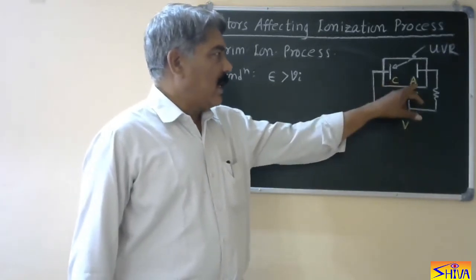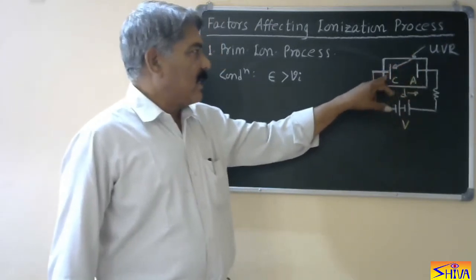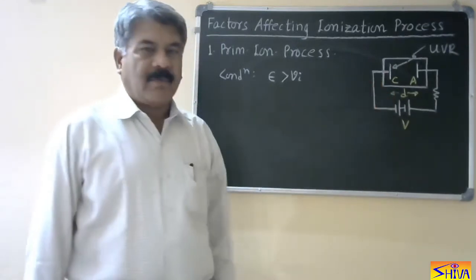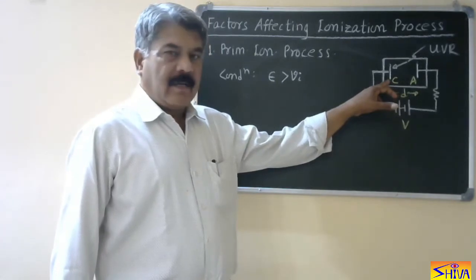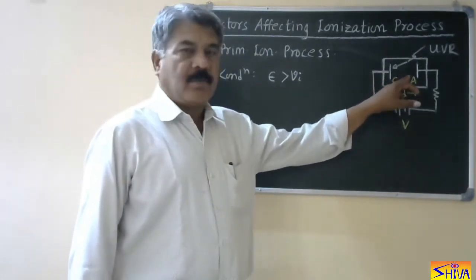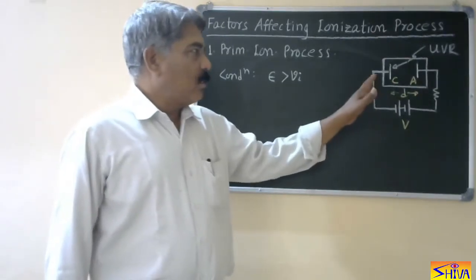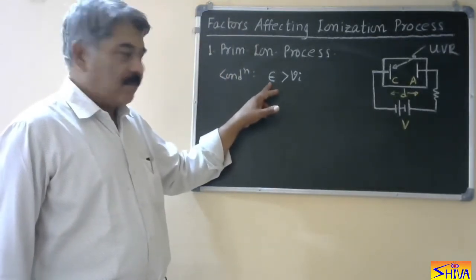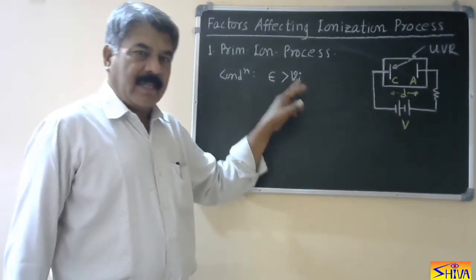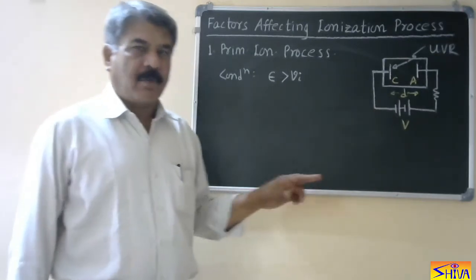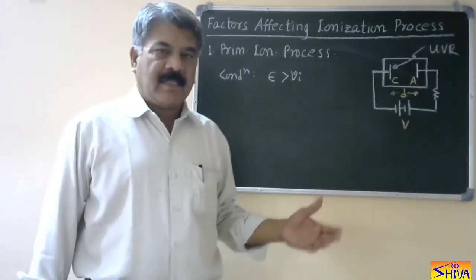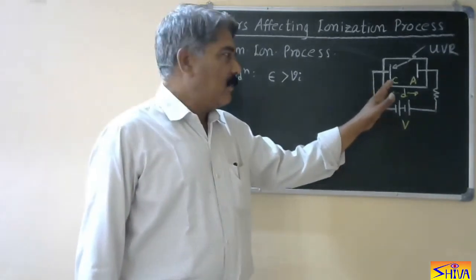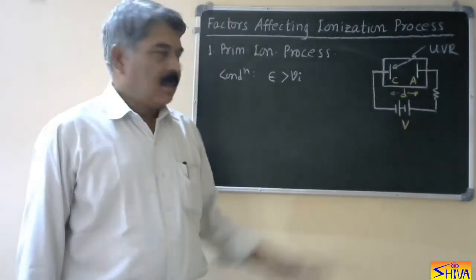The spacing between the cathode and anode plate is D. There is ultraviolet radiation on the cathode. When ultraviolet radiation falls on the cathode, one electron is ejected. Being a negatively charged particle, it starts moving towards the anode, and in the process it collides with the air molecule. If the kinetic energy of this electron is higher than the ionization potential of the gas, there will be breakdown of the gas molecule, forming one electron and one positive ion.